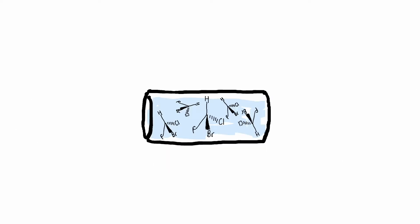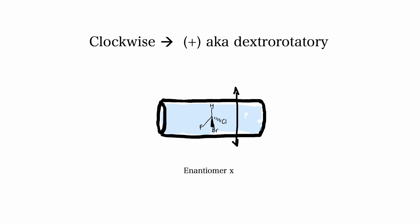The plane polarized light then passes through a sample cell containing the substance that we want to test. If the substance is optically active, it will rotate the plane polarized light.